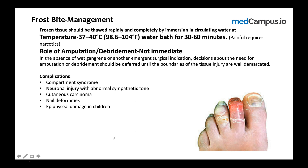Regarding the role of amputation or debridement: it is not done immediately. You need to wait for a clear demarcation line to develop. For example, in a frostbitten finger, the demarcation line seen in early stages may move up over time. So you must wait for the clear demarcation line to develop before proceeding with amputation or debridement if necessary.